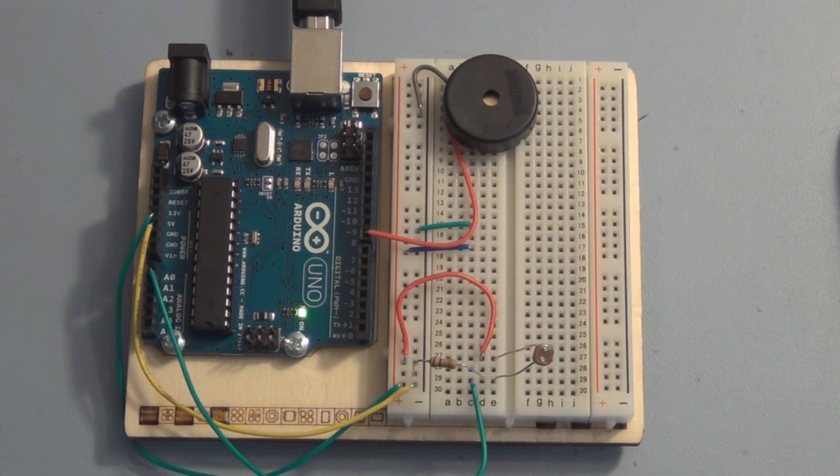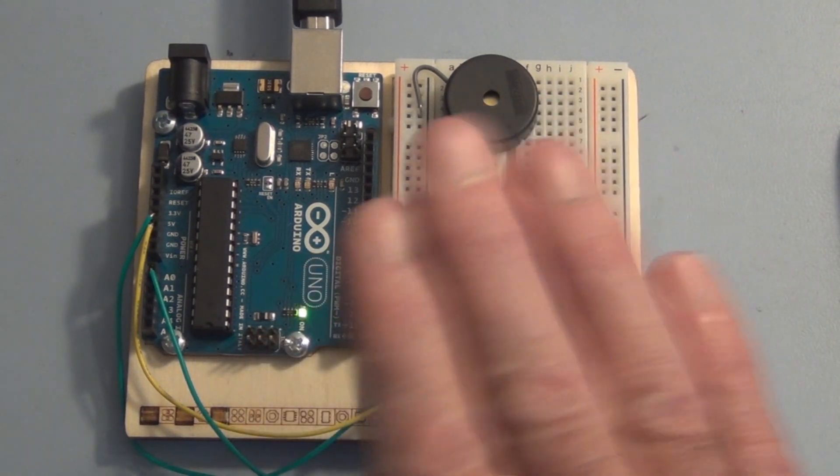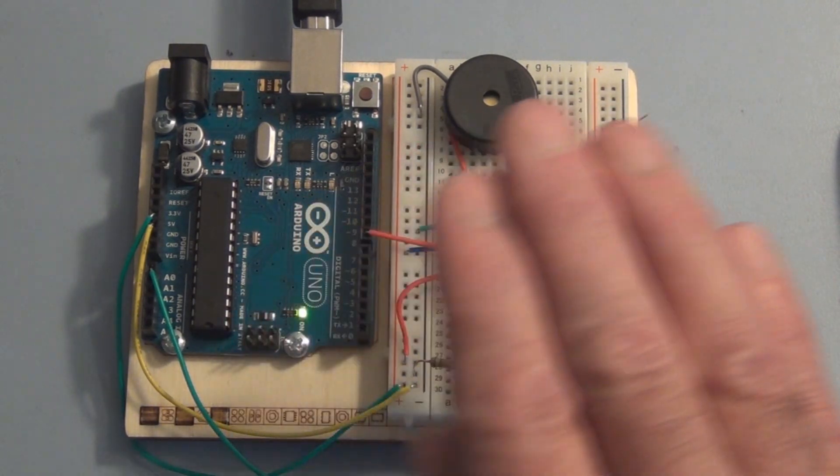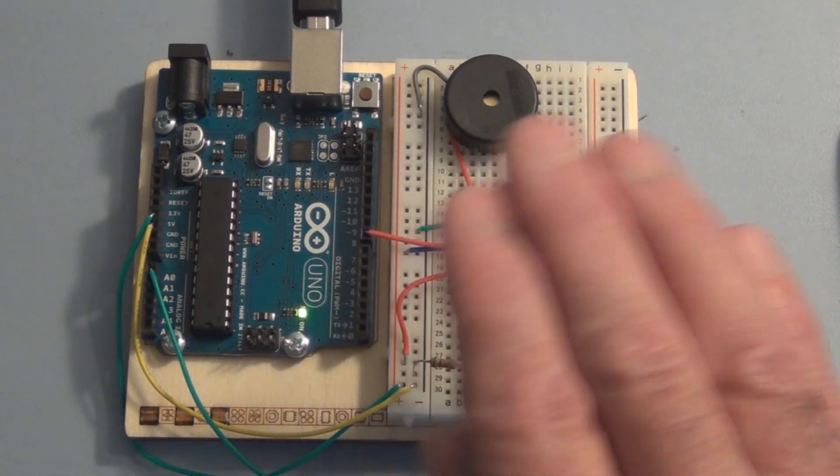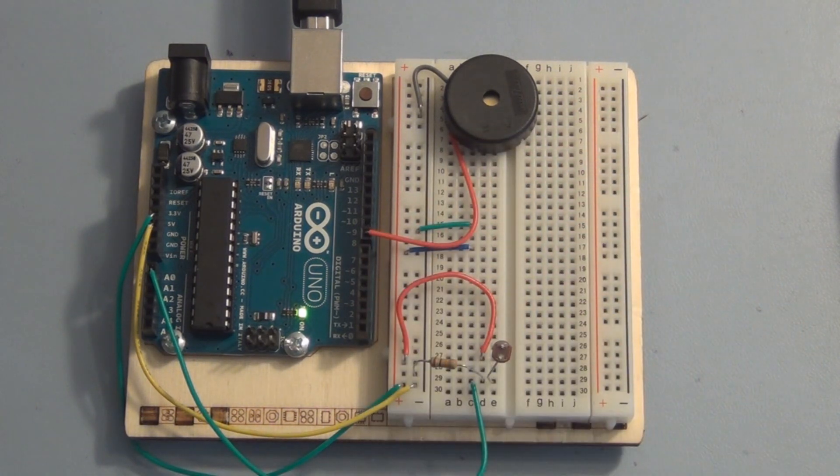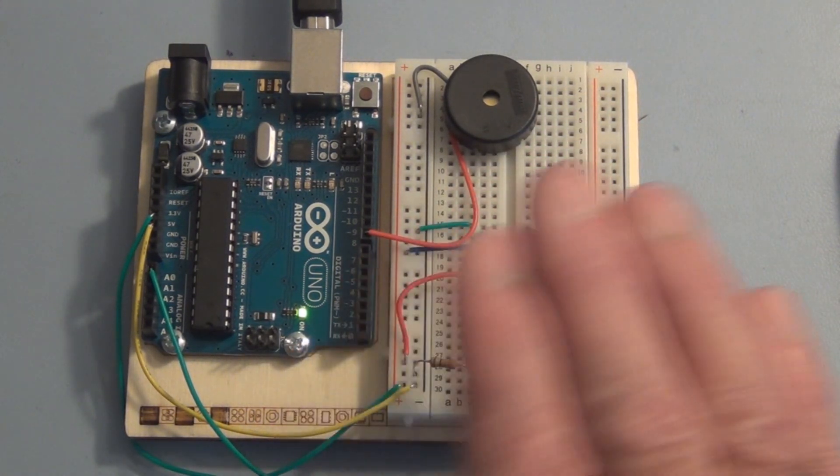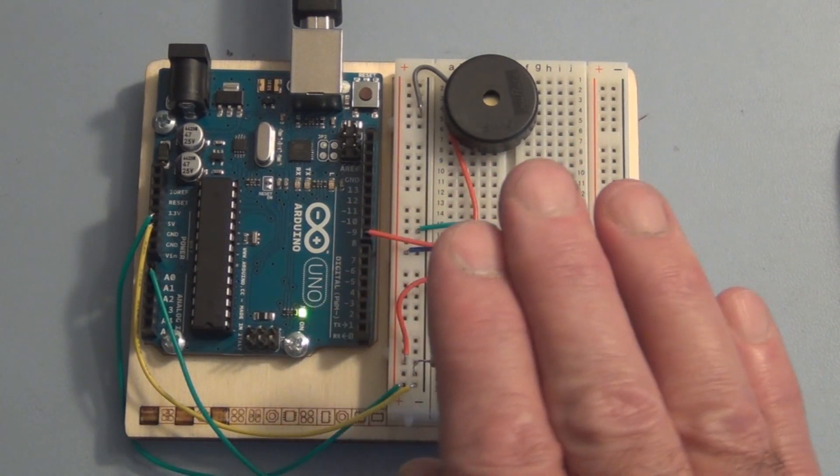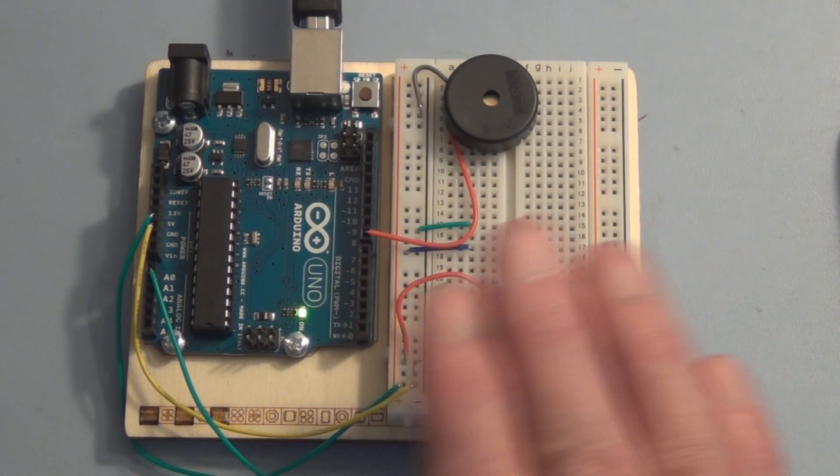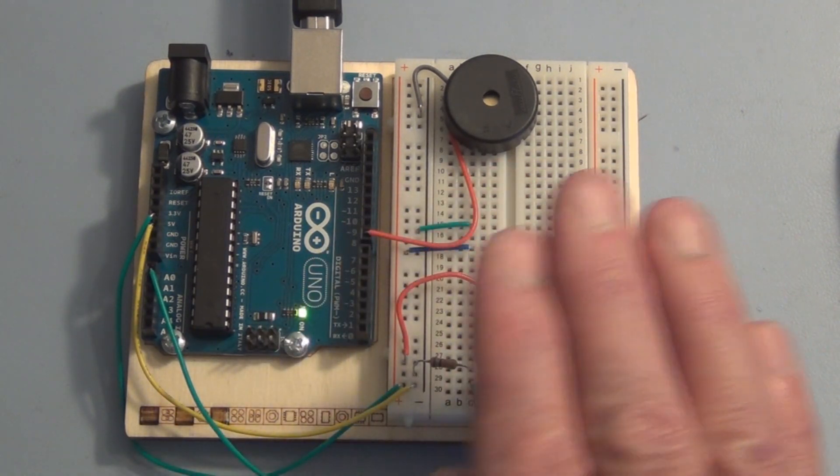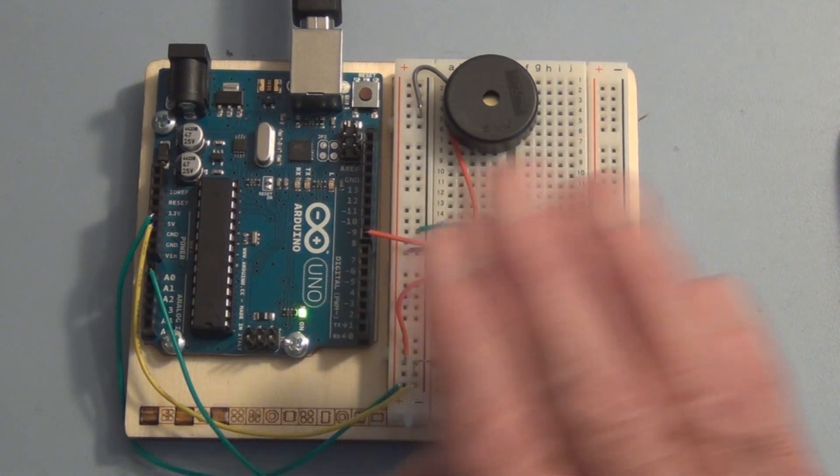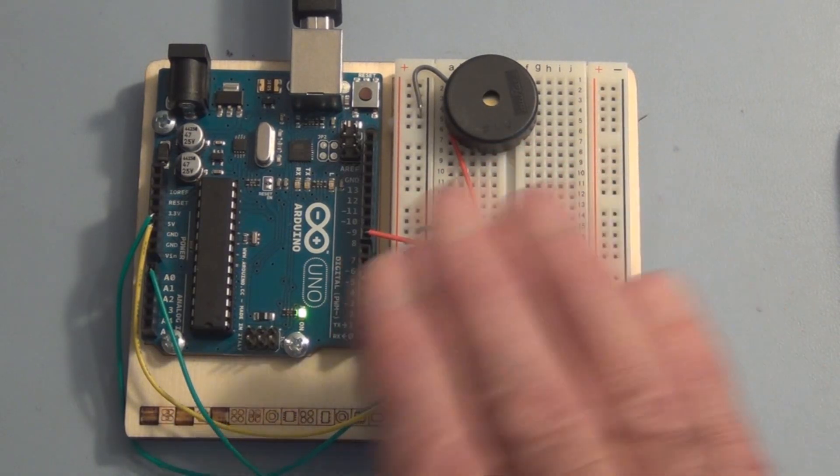There you go. That's not too annoying. There it is for what it's worth creating sounds with the Arduino Uno, varying the light on a photoresistor and then converting that to a frequency, a varying frequency that we hear on this piezo element.